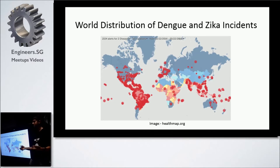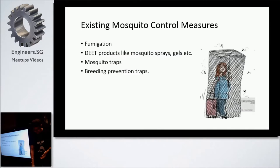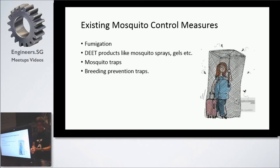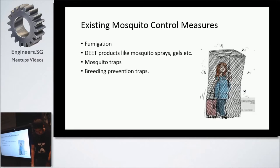Had I included more diseases like chikungunya and malaria, a lot more dots would have come up. The existing control measures include fumigation, mosquito gels, traps, and breeding prevention traps. I think all of us know about fumigation and the sprays. I'll talk a little bit about the traps.